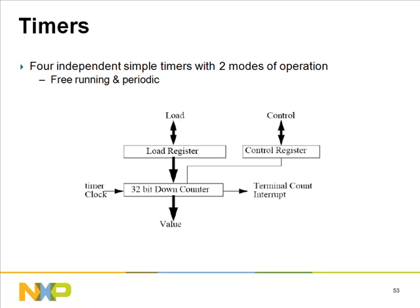The LPC 313X contains four fully independent timer modules that can generate interrupts after a preset time interval. Two modes are supported: free running — the timer generates an interrupt when the counter reaches zero and wraps around at the highest value; and periodic — the timer generates an interrupt when the counter reaches zero, reloads from a load register, and continues counting down, generating repeated interrupts at regular intervals.